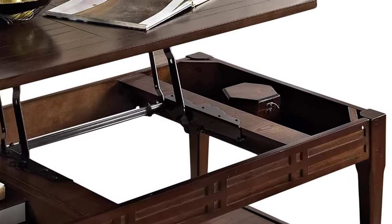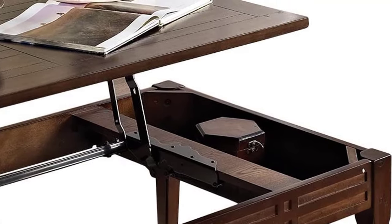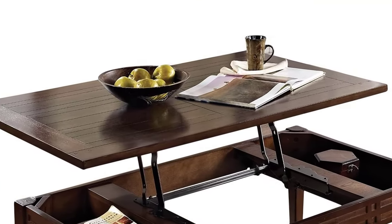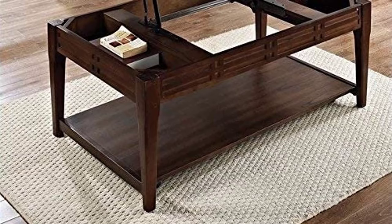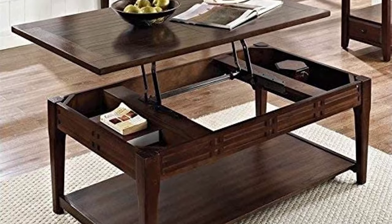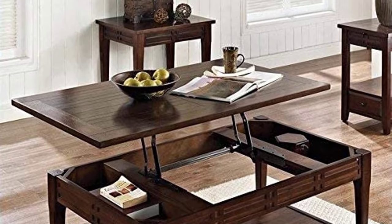The table comes with caster wheels to move around the room comfortably, which also makes it easy to use for different purposes. It is made up of durable wood and the style is rustic with a glossy smooth finish. The product dimensions are 30 by 48 by 19.5 inches.